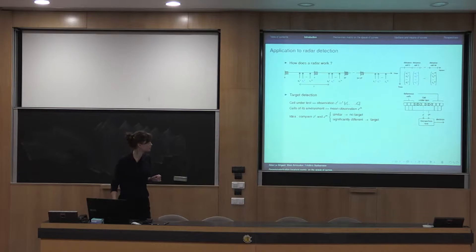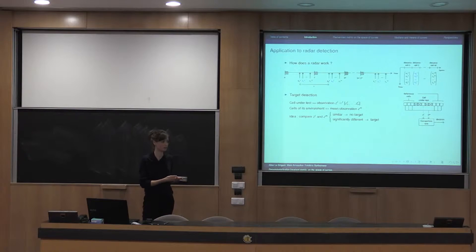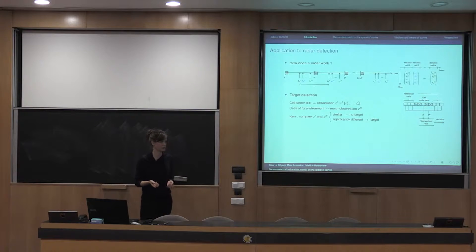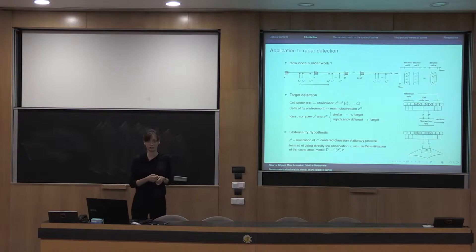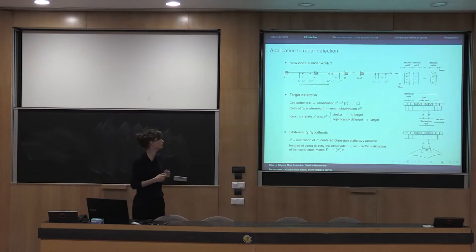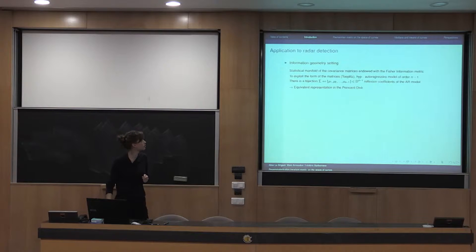We're interested in target detection. The simple idea is: if you want to know if there's a target in a certain test cell, you compare the information for that cell to the average information on the cells in its environment. If it's similar, there is no target; if it's significantly different, then there is a target. What's usually done is to assume the vectors of observations are realizations of centered Gaussian stationary processes, so instead of using the observations directly, you estimate the covariance matrix and compare covariance matrices — computing the distance. This is when information geometry comes in.